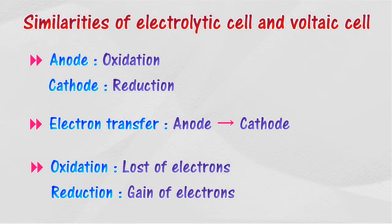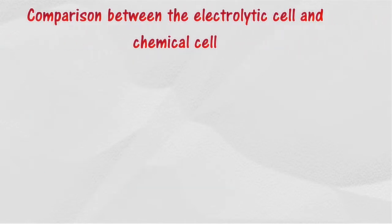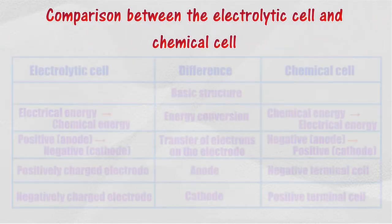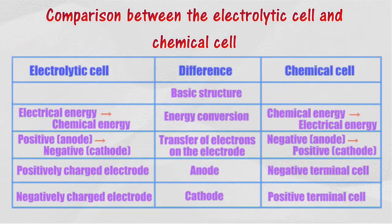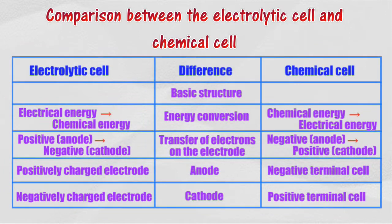Oxidation involves the loss of electrons, while reduction involves obtaining electrons. The following shows a comparison between the electrolytic cell and chemical cell in terms of basic structure, energy conversion, and transfer of electrons on the electrodes.